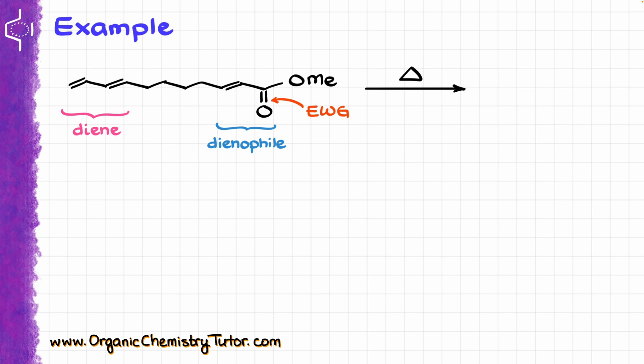I will number my diene 1 through 4, then I will number my dienophile as carbons 5 and 6, and the middle portion of the molecule I will number with letters A, B, C, and D, because I have four carbons in this particular example. The reason I like to do that is to separate the two cycles I'm going to be forming. My atoms 1 through 4 and then 5 and 6 are going to make my main ring — the six-membered ring for the Diels-Alder reaction — and my atoms A, B, C, and D are going to be my second ring that I'm also forming in this molecule.